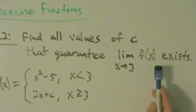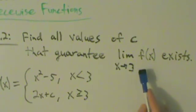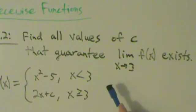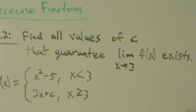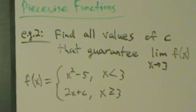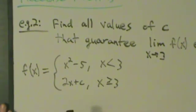So remember, what does it mean for this two-sided limit to exist? The left-hand limit and the right-hand limit both have to exist and equal the same thing. So what we want to do here is make sure that the limit as x approaches 3 from the left of f of x equals the limit as x approaches 3 from the right.